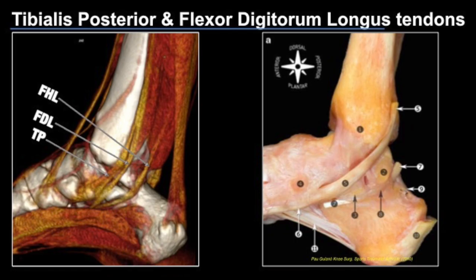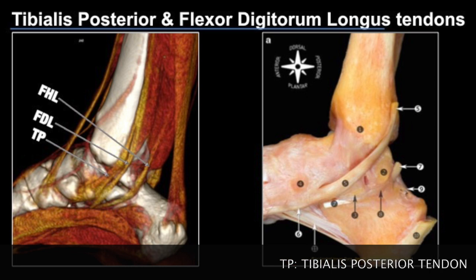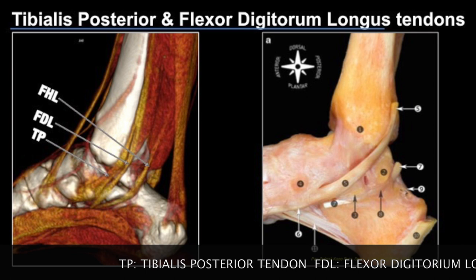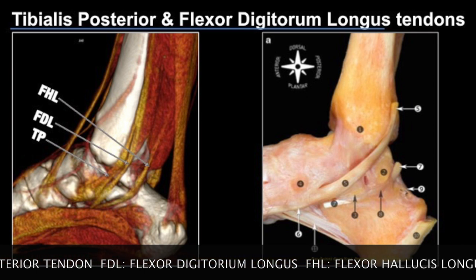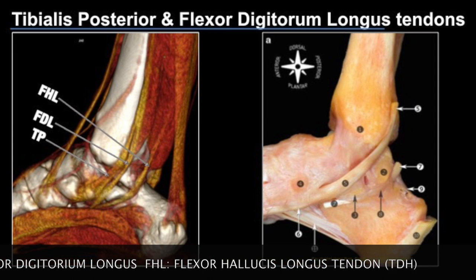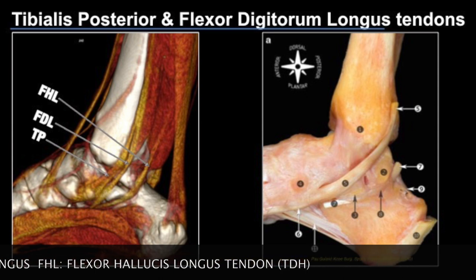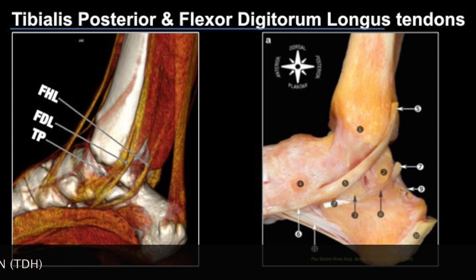This is a volume rendered image where we see the location of the tibialis posterior tendon. Just adjacent to that we have the flexor digitorum longus tendon, and a little bit more posteriorly we have the flexor hallucis longus tendon as it passes between the two tubercles of the talus. So that's the tibialis posterior, the flexor digitorum longus, and the flexor hallucis longus.